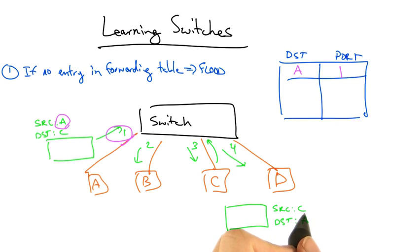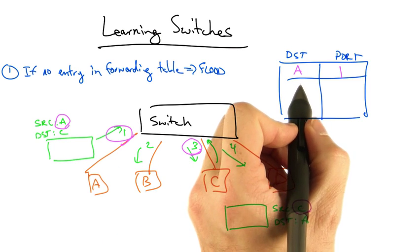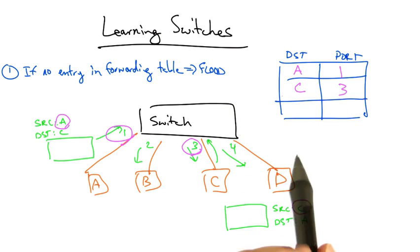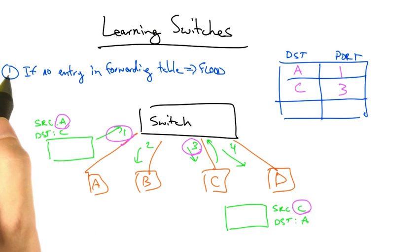Note also that when C replies, the switch learns another association between address C and port 3. So future frames destined for host C no longer need to be flooded either. They can simply be forwarded to output port 3.